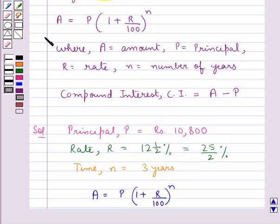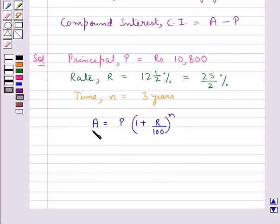Now from the key idea we have this formula amount A equals principal P multiplied by 1 plus R upon 100 whole to the power n.